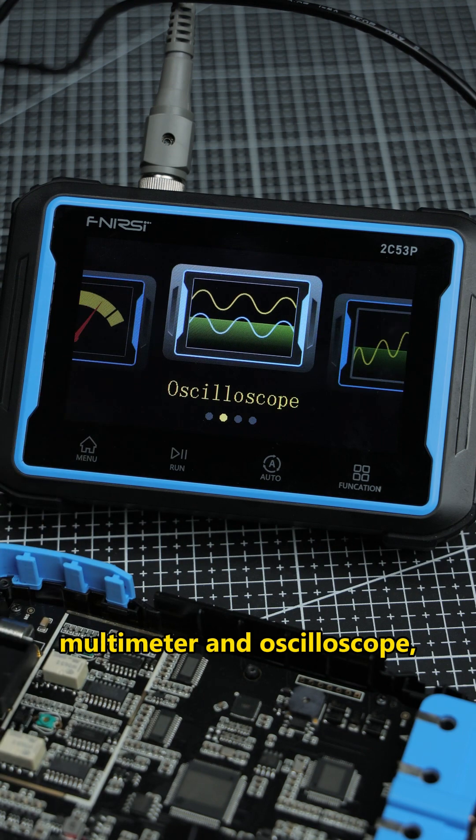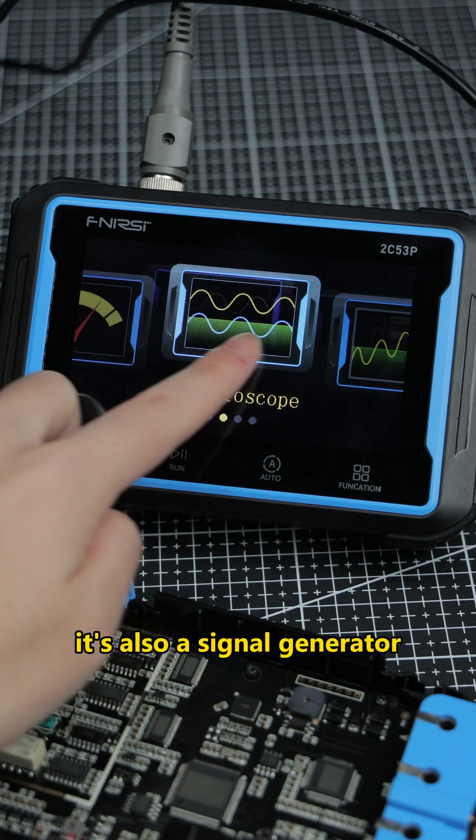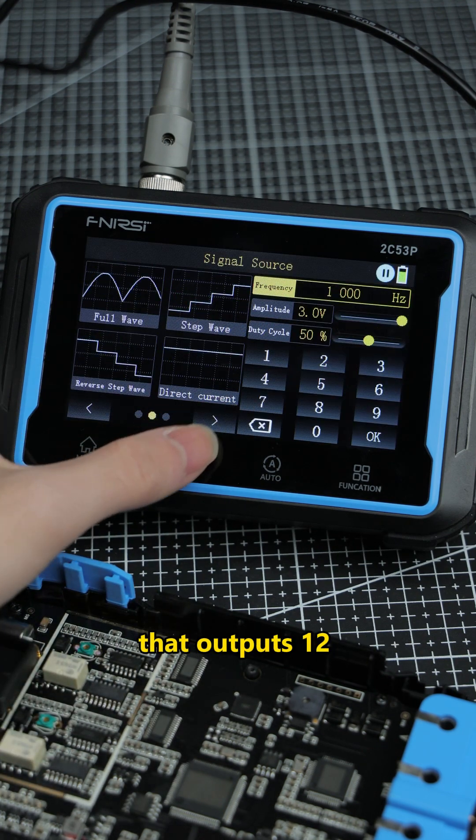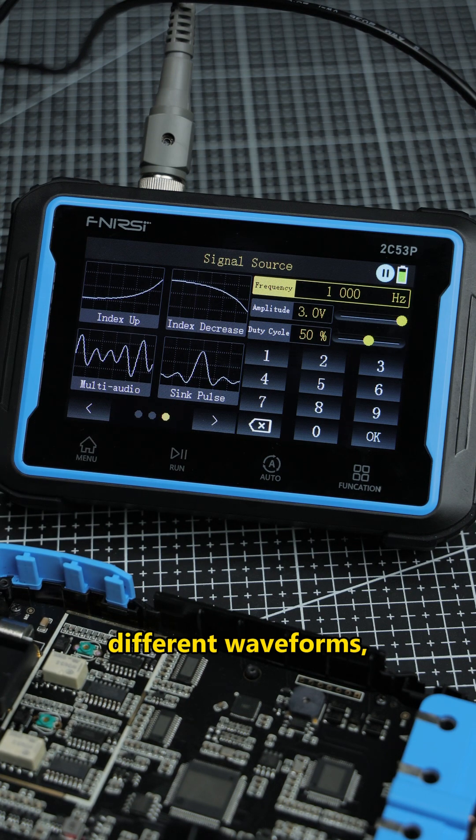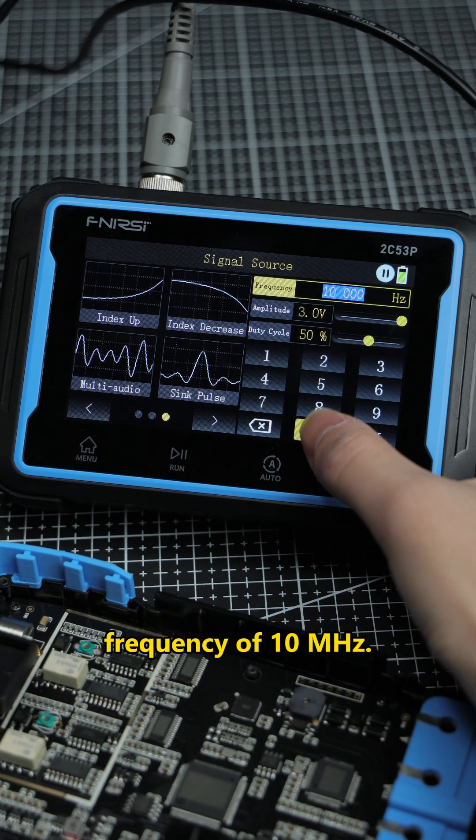Besides being a multimeter and oscilloscope, it's also a signal generator that outputs 12 different waveforms with a max output frequency of 10 MHz.